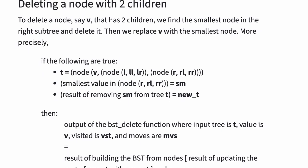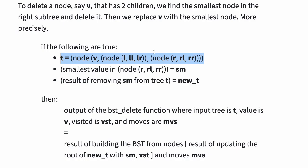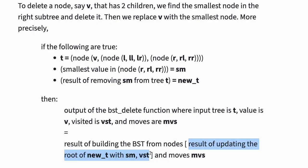To delete a node V that has 2 children, we find the smallest node in the right subtree and delete it, then replace V with that smallest node. More precisely, if T is node V with left child L, LL, LR, and right child R, RL, RR, and the smallest value in node R, RL, RR is SM, and the result of removing SM from tree T is new T, then the output of the BST delete function where input tree is T, value is V, visited is VST, and moves are MVs, is equal to the result of building the BST from nodes: result of updating the root of new T with SM, and then VST, and moves MVs.